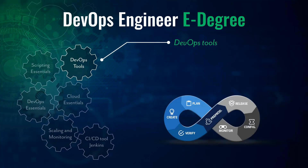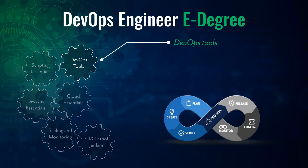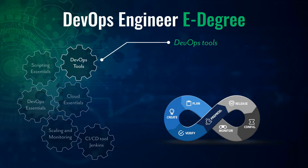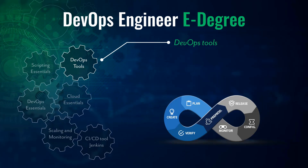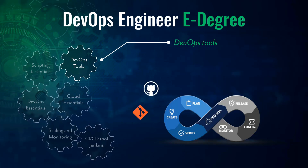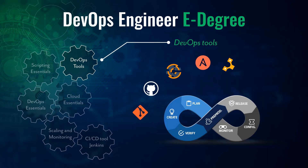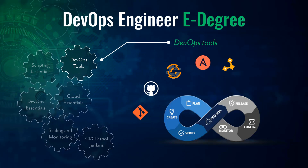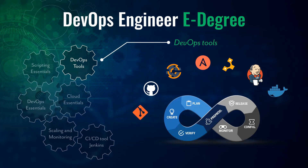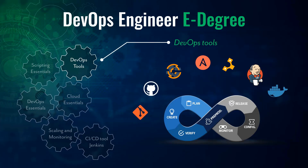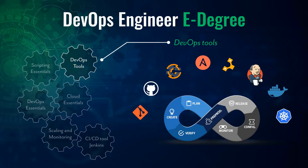In the Tools of the Trade course, you will master the DevOps tools that are widely used in any DevOps environment. We are going to cover Vagrant for instant provisioning, Git and GitHub for version control, Chef, Ansible, and Puppet for configuration management, Jenkins for continuous integration and continuous delivery, Docker for containerization, and Kubernetes for container orchestration.